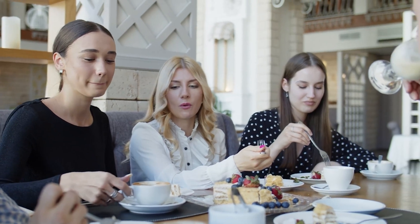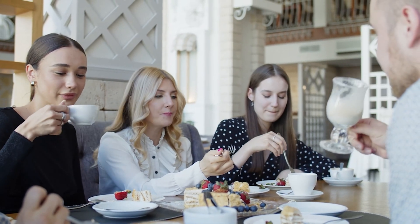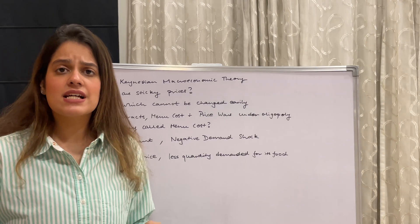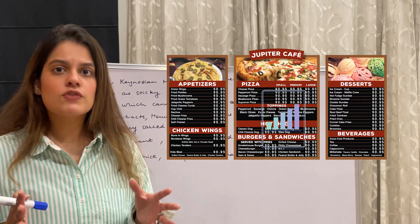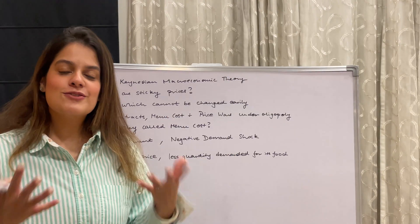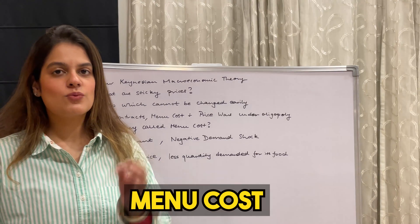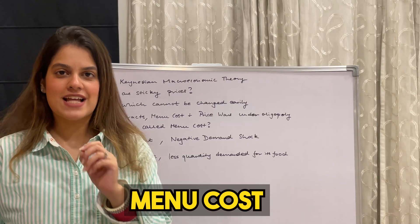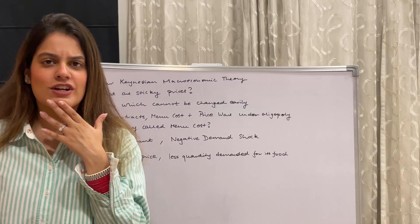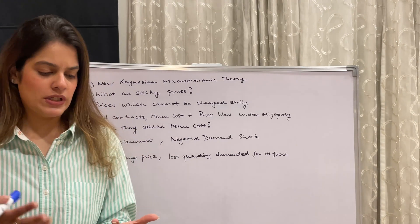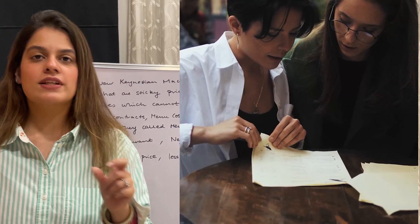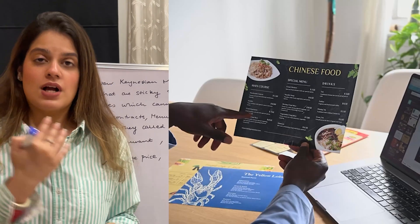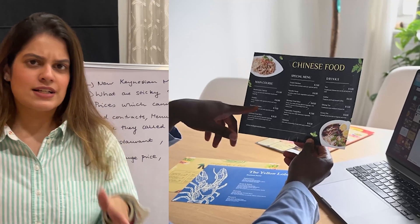Suppose we go to a restaurant and due to some reason they have to change their pricing. When they change the pricing, they have to change the menu with new prices. The cost they face in changing the menu is literally called the menu cost. That is why they don't wish to change prices so easily. You've probably seen that when two or three prices change, they don't print a whole new menu — they just cross it out or put a little tape on it rather than spending money to reprint everything.